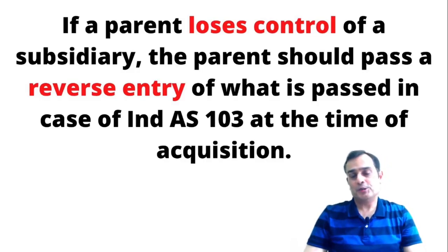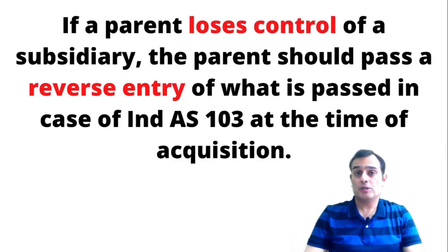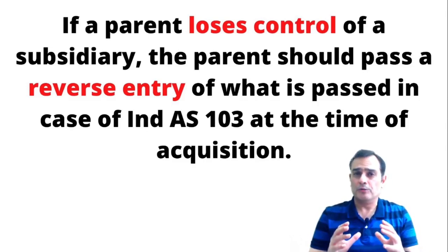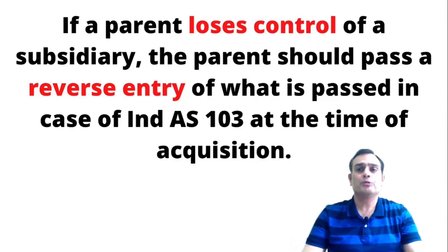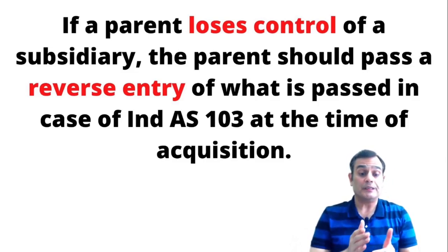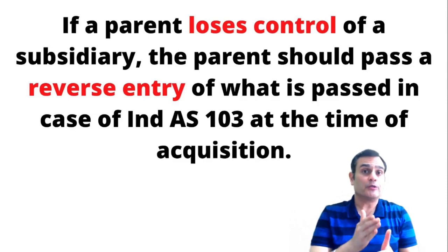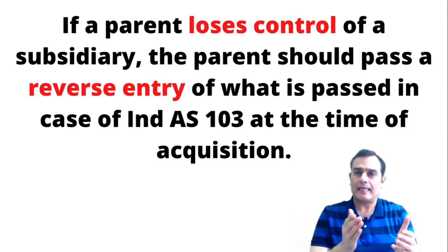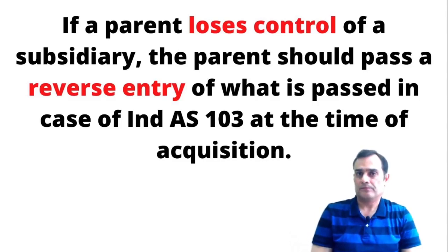The trick is that when you find yourself in a situation where a parent company has made a disposal — whether complete, partial, or deemed — and the parent loses control over the subsidiary, you need to pass a reversal entry of what you do in Ind AS 103. When as an investor you acquire control over a subsidiary, you put an acquisition entry under Ind AS 103 where you debit the assets, credit the liabilities, record the NCI, record the consideration, and take a balancing figure as goodwill.